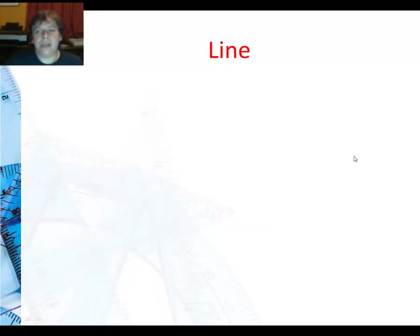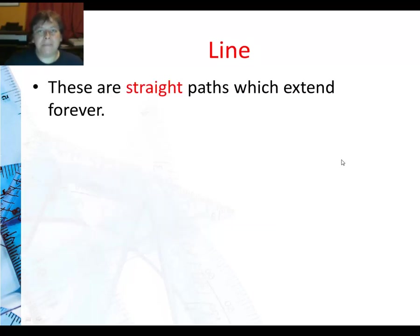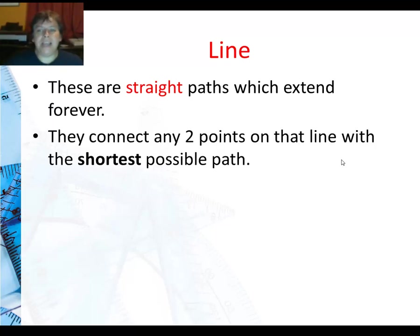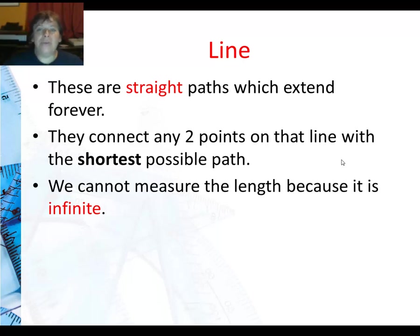So now we take a look at lines. These are straight paths which extend forever. And by the way, when we say line in geometry, we automatically mean a straight line. We don't mean a wavy line or a zigzaggy line. It's automatically straight and it's the shortest path. They connect any two points on that line with the shortest path. If it's not the shortest path, it's not a line.